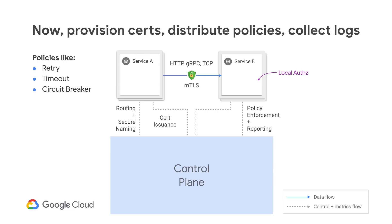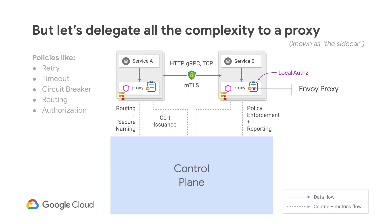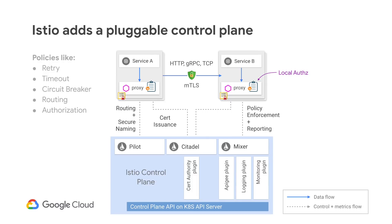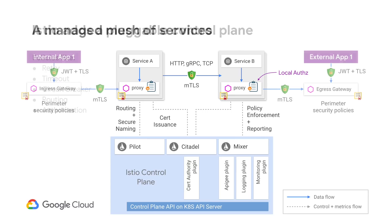We want services to all adhere to communication policies related to retries, timeouts, and authentication. And we want all the telemetry data from each service. So we need some sort of system to support all of that. Let's delegate all that complexity of enforcing the communication protocols to a standalone proxy — known as a sidecar proxy or the Envoy proxy. This is the model that Istio uses. Istio starts with the Envoy proxy as a sidecar and adds a set of pieces to help manage and provision the distributed set of proxies. Envoy proxy allows you to manage the inbound calls through ingress gateway and outbound calls through egress gateway, so you can put checks and regulations on inbound and outbound traffic. This is what we can call a managed mesh of services.